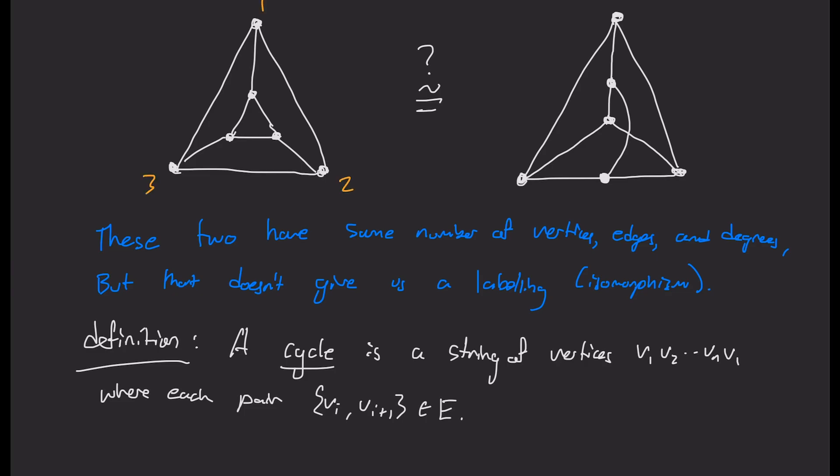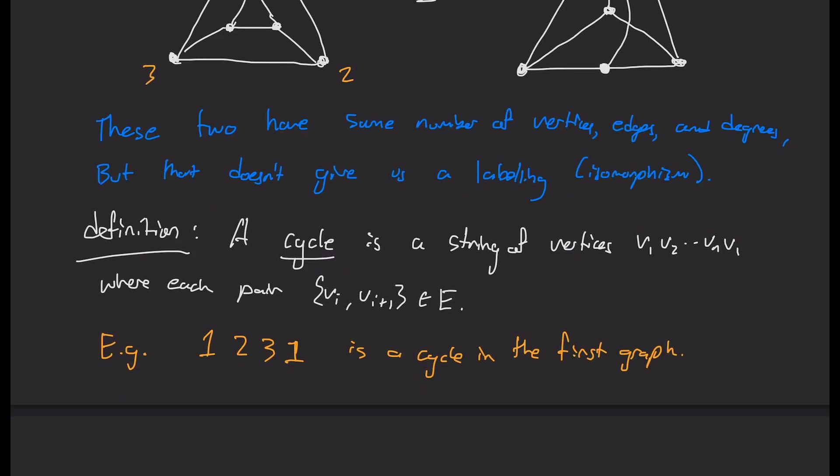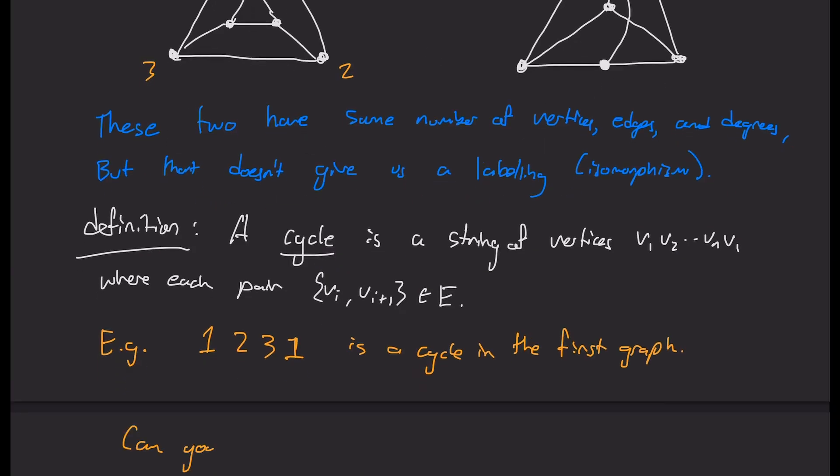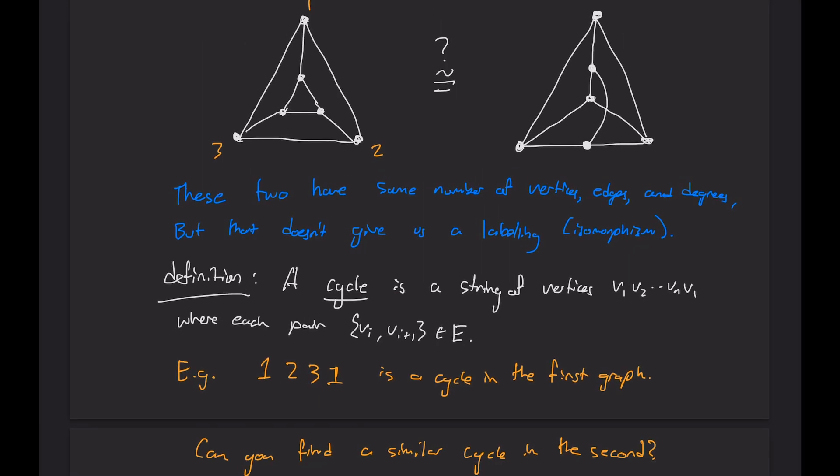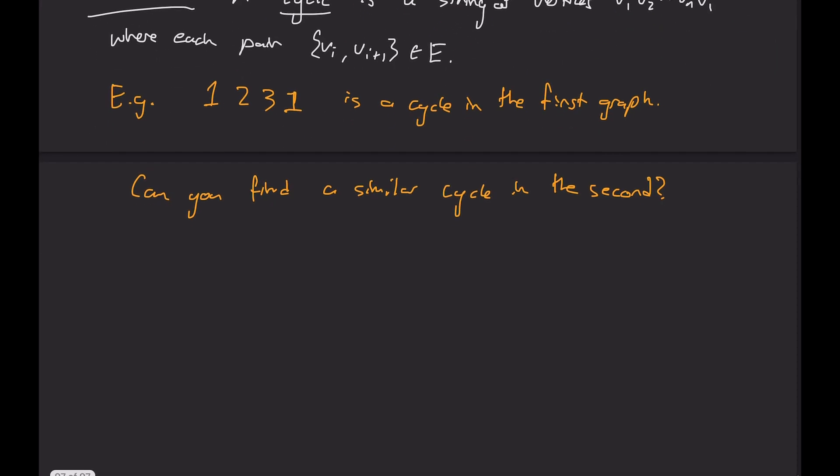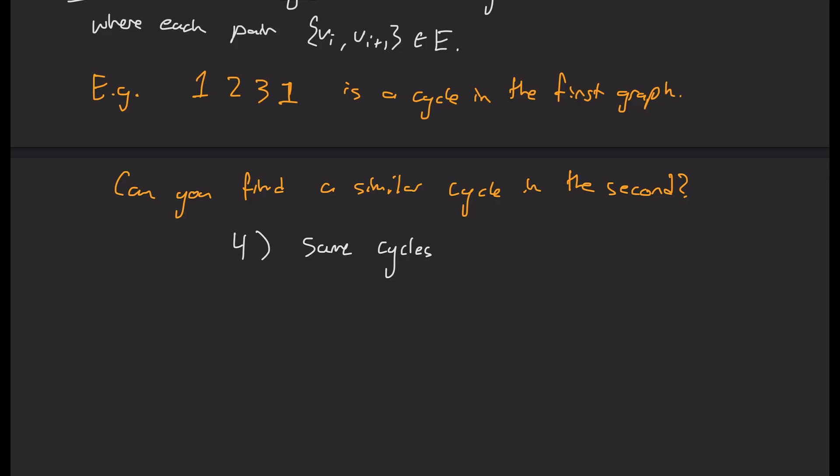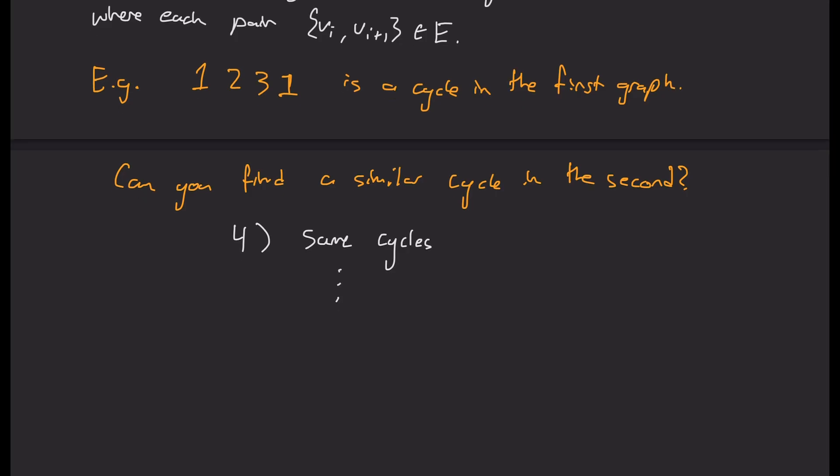So for example, if I label one, two, three in this bigger triangle on the left graph, then there's a cycle one, two, three, one, kind of going clockwise around this triangle. And that's a cycle in the first graph. Can you find a similar cycle in the second graph? And can you find the same cycle length in the second graph? So if isomorphisms preserve all connection information, then they should also have the same cycles.